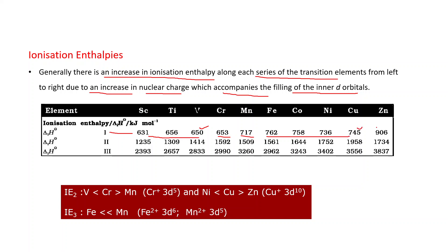The high ionization enthalpy at manganese is because it has the 3d5–4s2 configuration, which is stable, so removal of an electron is difficult. Similarly, zinc with 3d10–4s2 also has a stable configuration, so removal of an electron is again difficult, giving a higher ionization enthalpy.